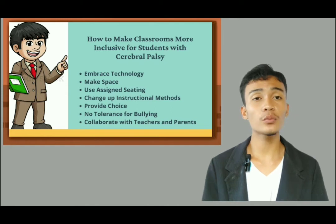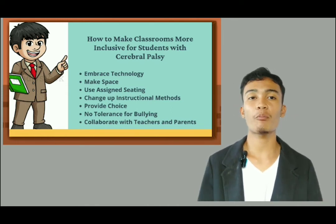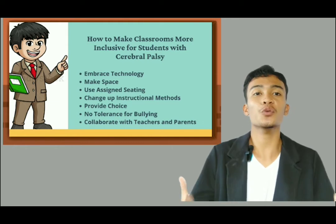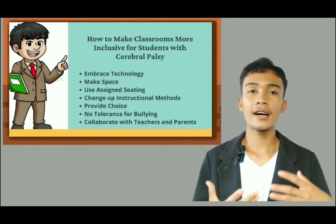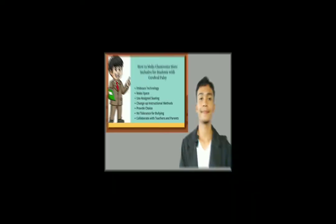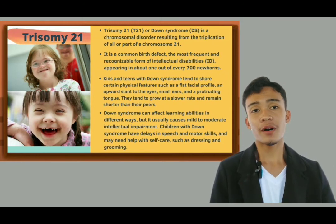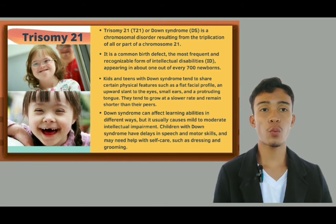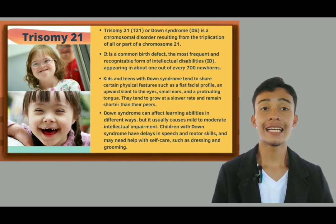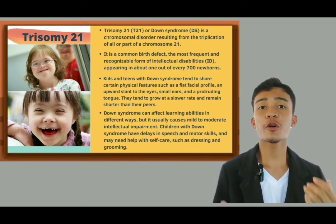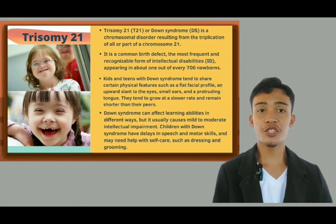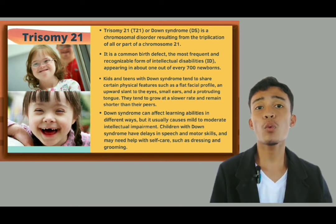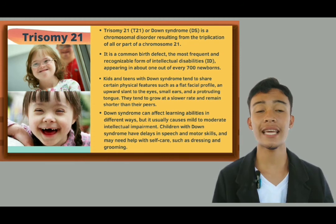Last, collaborate with teachers and parents — that is the most important. We have to collaborate with our fellow teachers and talk to the parents of children with special needs. Moving on to our next example of intellectual disability, we have Trisomy 21, or as we are more familiar with it, Down syndrome. It is a chromosomal condition in which extra genetic material causes delays in the way a child develops both mentally and physically.